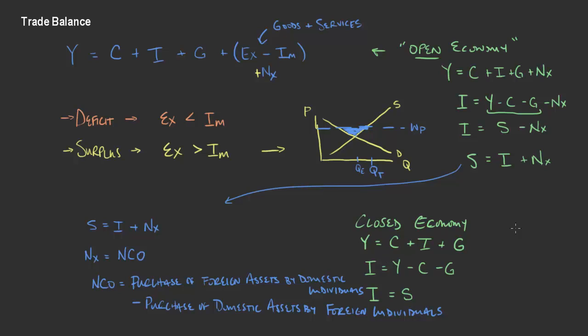So there are a few identities here that we want to hold constant and think through — that's the overview of trade balance. Now we're going to think through it more in terms of the data we've seen and the things that would determine net capital outflow, which would include exchange rates and understanding what that looks like in the economy.